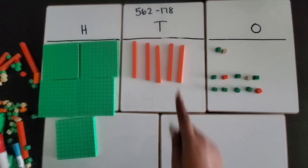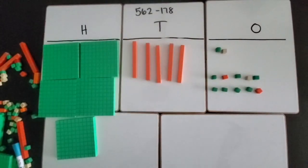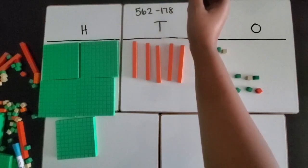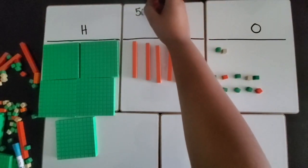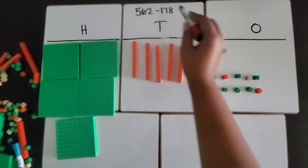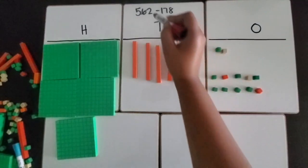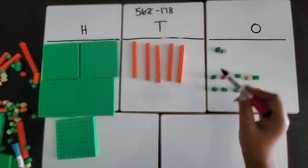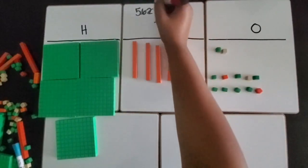I used one of the six tens and made a trade so that I had more ones. Now I have 10, 11, 12 ones, and I have five tens.